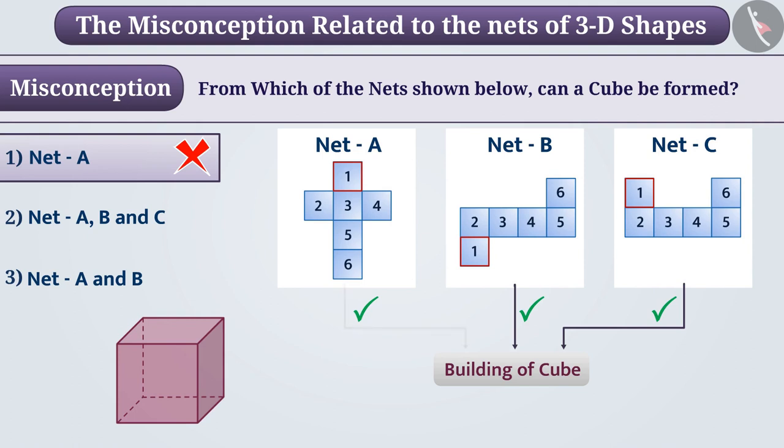Here, they ignore imagining the 3D shape from the net and gave option 2 as answer. But this is also an incorrect answer.